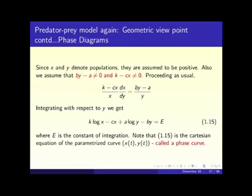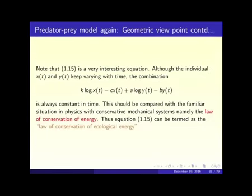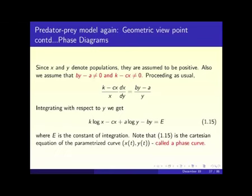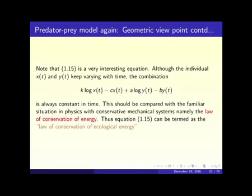Equation 1.15 is a very interesting equation. It says that k·log x - cx + a·log y - by is always constant — meaning the combination k·log x(t) - cx(t) + a·log y(t) - by(t) is always constant, equal to E, and does not change with time. This is a conserved quantity.